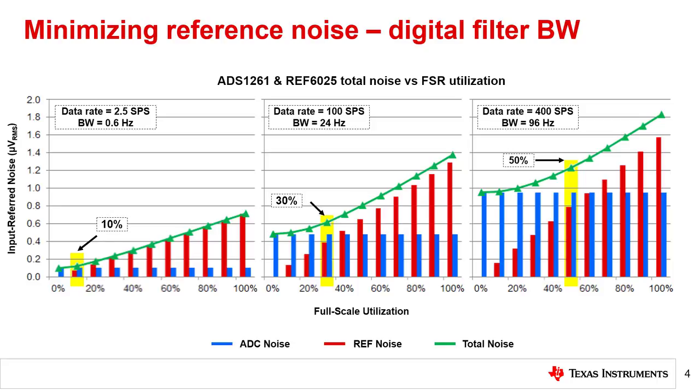Ultimately, while these methods can mitigate reference noise for many applications, your system may have fixed parameters such as settling time or sensor output voltage that make these techniques harder to employ.